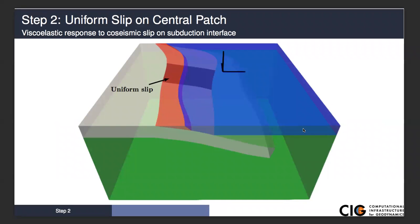This is our geometry and problem description for step two. Using the central fault patch created in the mesh, we're going to prescribe uniform slip on that fault patch. We will use viscoelastic properties in the subducting slab with a depth-dependent viscosity, as well as in the mantle with a depth-dependent viscosity. The wedge and crust will be elastic.